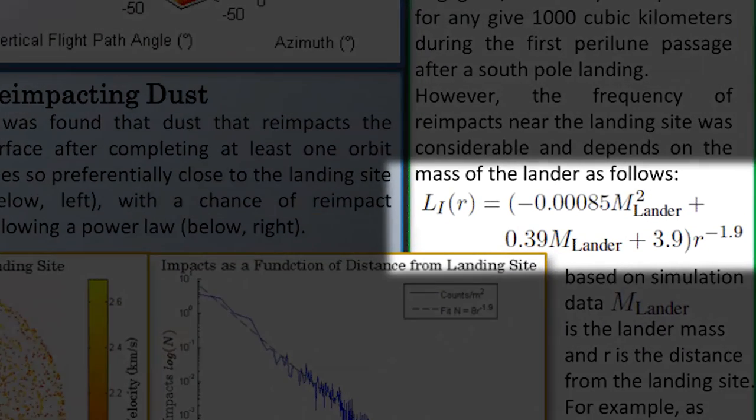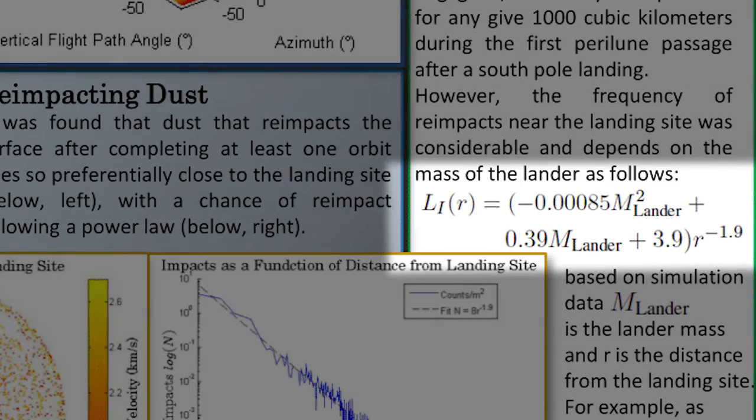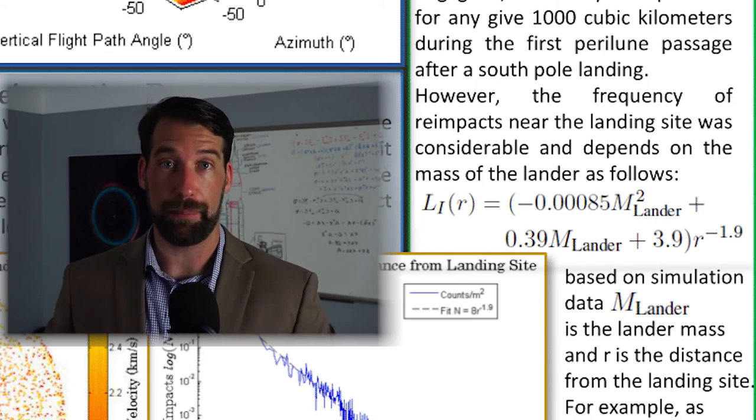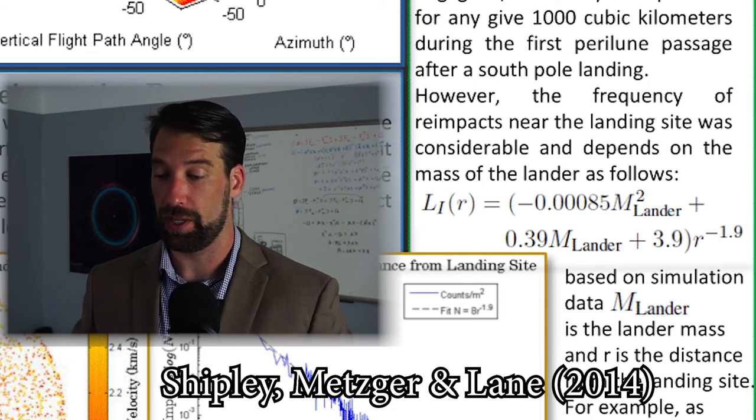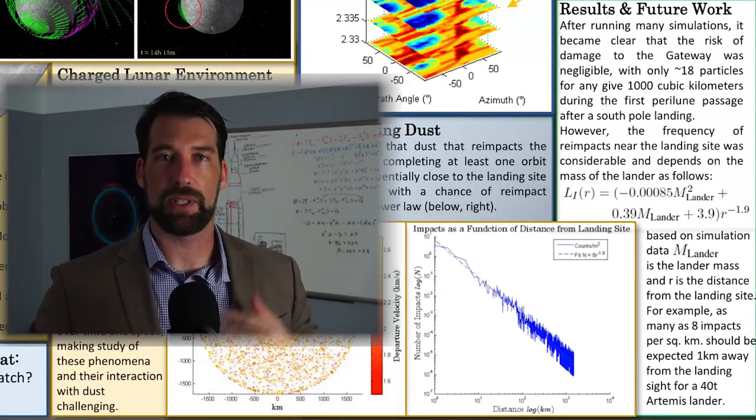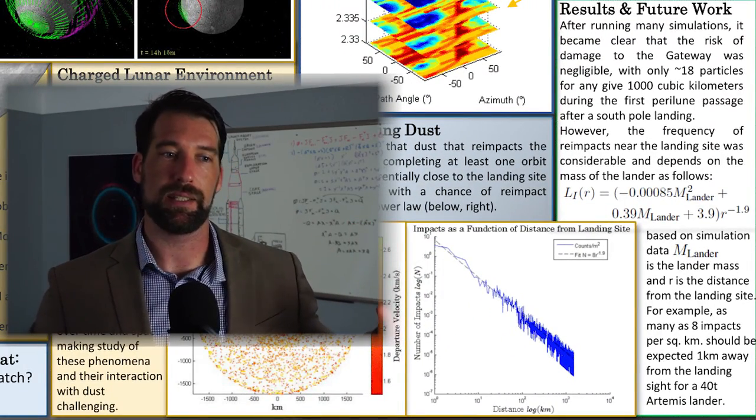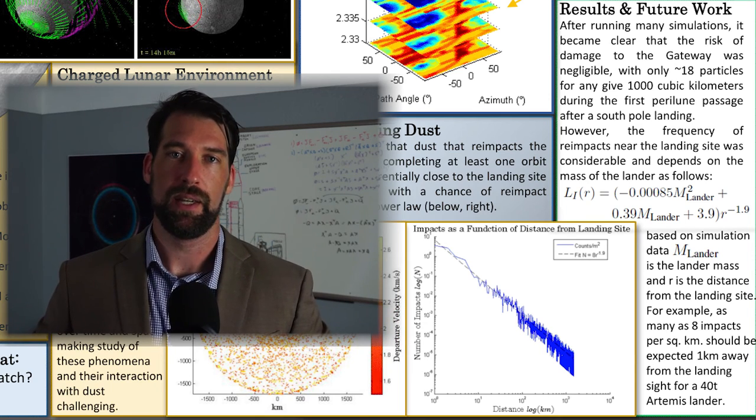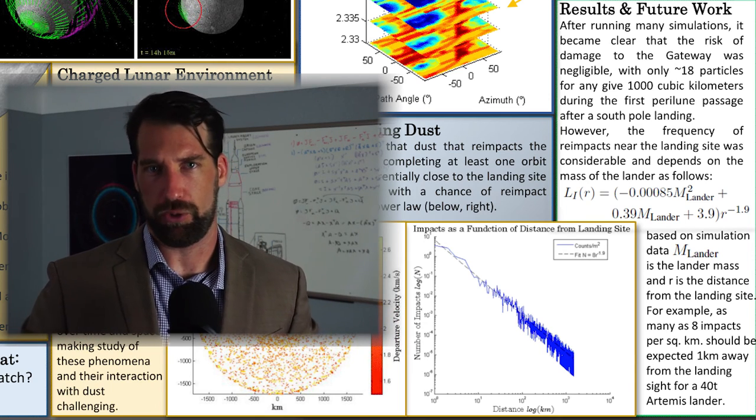This expected frequency from re-impacting dust is a function of overall lander mass, based on estimations by Metzger. This estimation considers total ejected mass, particle size distribution, and total mass ejected above a certain given velocity. The results of this study can be seen here, and I'd like to emphasize that anything below 10 micrometers is pretty much carried away by the solar wind, and only a very small amount remains in orbit.